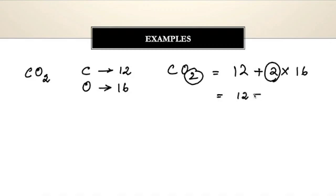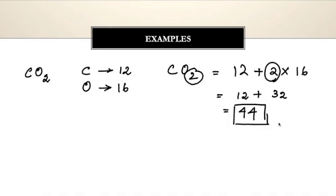12 plus 2 × 16 is 32, so the molecular mass of CO2 equals 44. By this method of calculation we also get the molecular mass of carbon dioxide as 44 — the same as the previous method — which means both methods are correct and authentic.